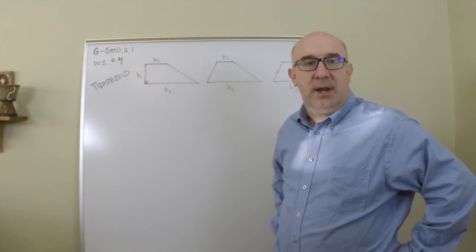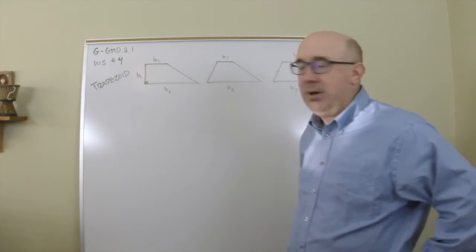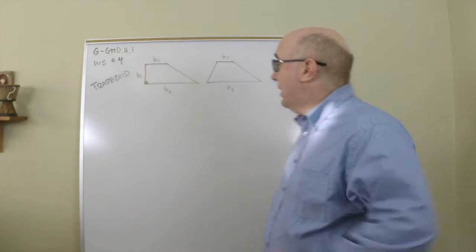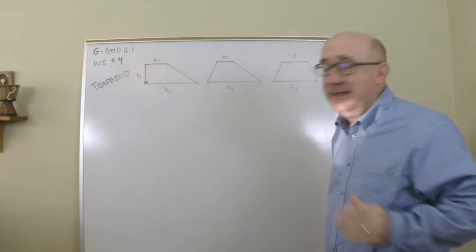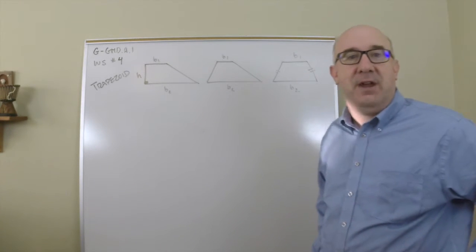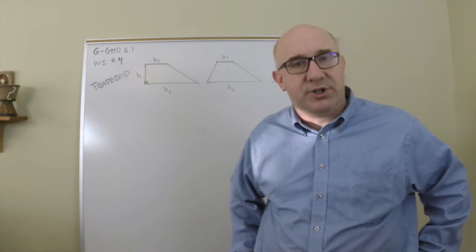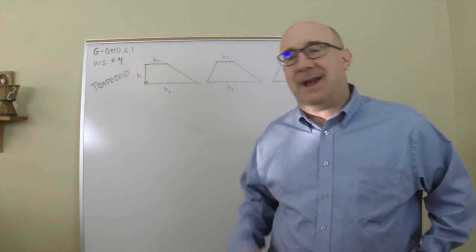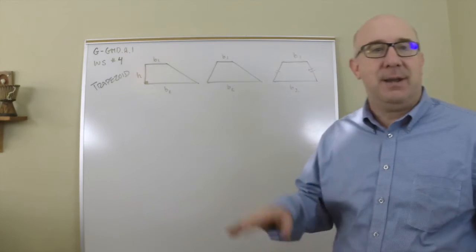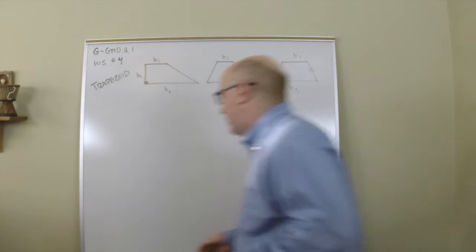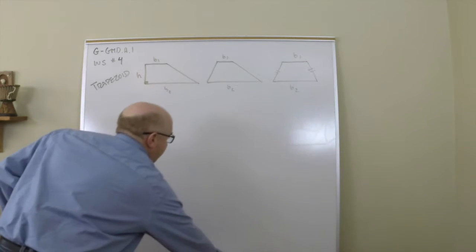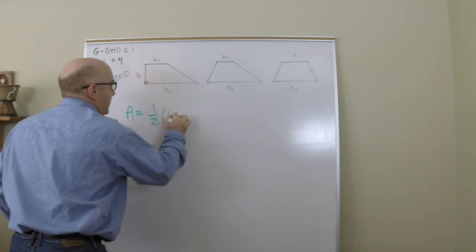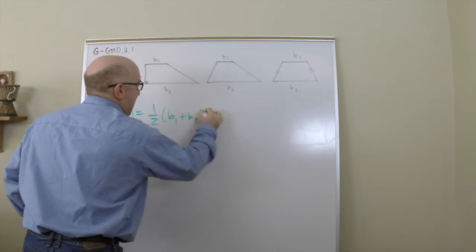This is GGMDA1 worksheet number four, all about the development of the formula for the trapezoid. The trapezoid is probably my favorite shape, and the reason it's my favorite is that it's just an awkward and weird shape. Its formula seems to come out of nowhere — like, I get triangles, I get parallelograms and rectangles, easy stuff — and then out of nowhere we get this crazy formula: area equals one half times (b1 + b2) times h.